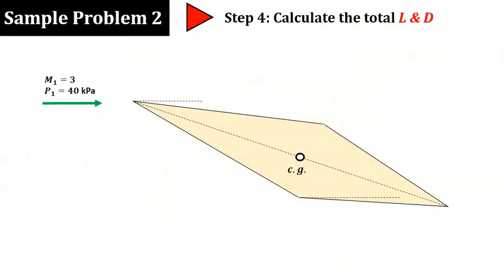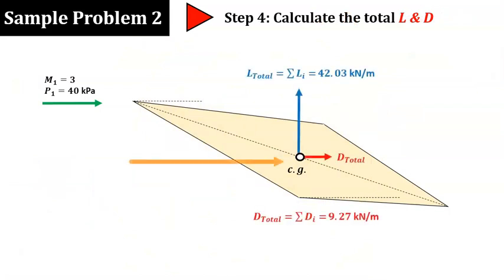Finally, in step 4, we can add up all the lift and drag forces to get the total lift and drag acting at the center of gravity of the wedge. If needed, you can also calculate the total force acting on the wedge.